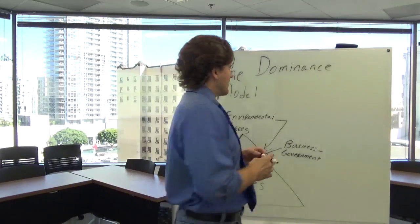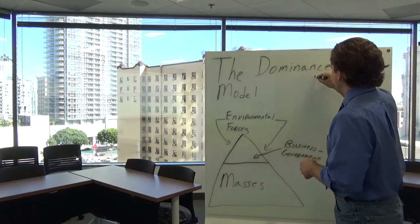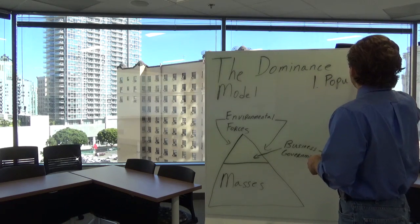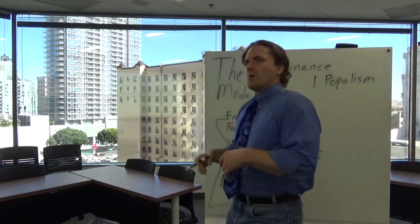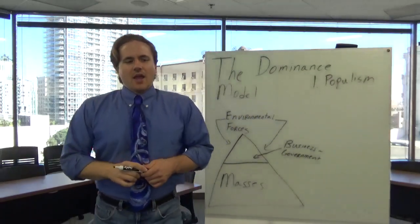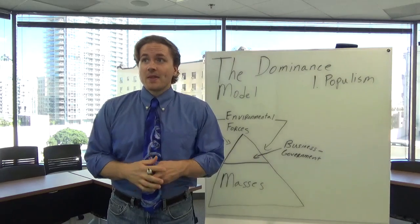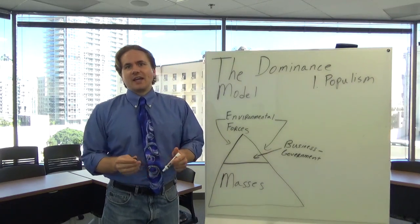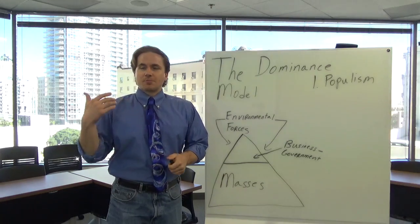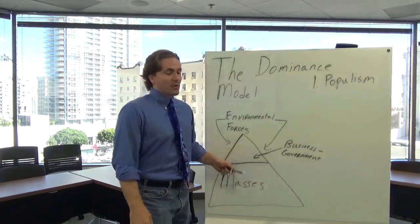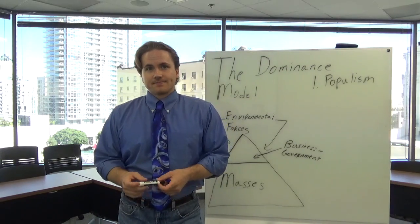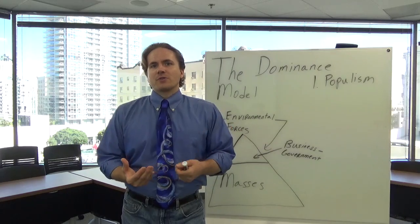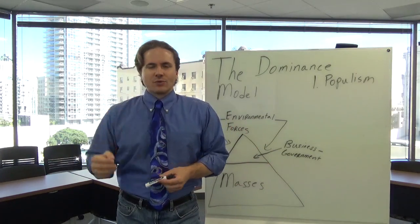Now, a very germane theory to the dominance model is populism. Populism is a movement that has been around throughout history. And it basically says that the common people, the masses, are being taken advantage of, disenfranchised, or exploited, and they wish to take power from this ruling elite. And when they do take power from this ruling elite, that enhances everybody's collective welfare.